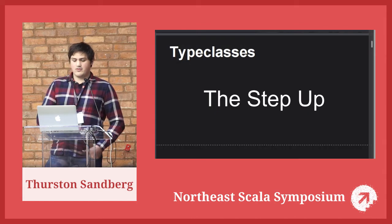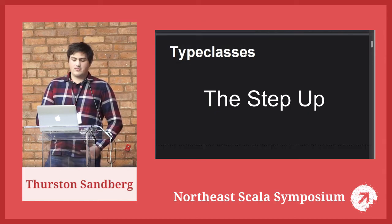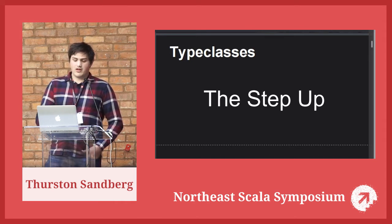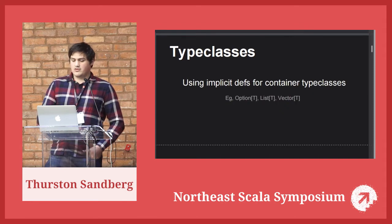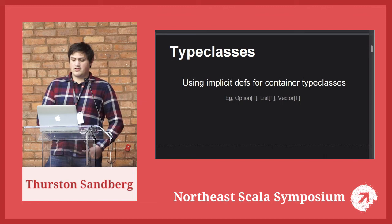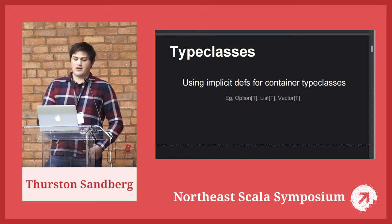Now that we've combined implicit values and type classes, let's take it a step up and combine implicit functions with type classes. The thing to note is that we actually pass implicit values to these implicit functions, all of which gets picked up implicitly. We'll use these implicit functions for container type classes — a type class for an option, list, vector, etc. — anything that takes a type T that's actually the value we care about, that the container simply holds.